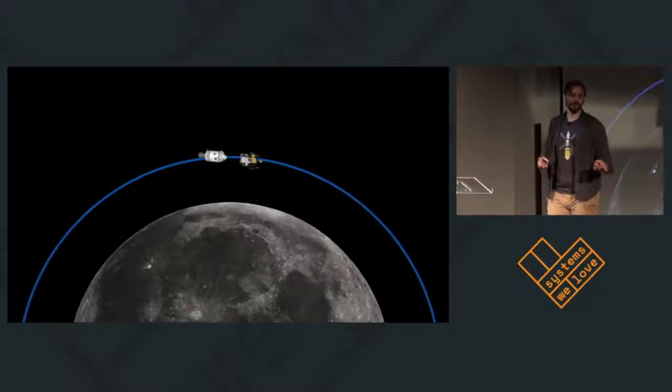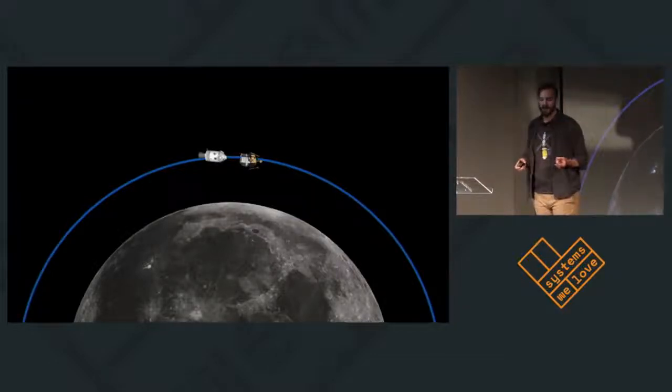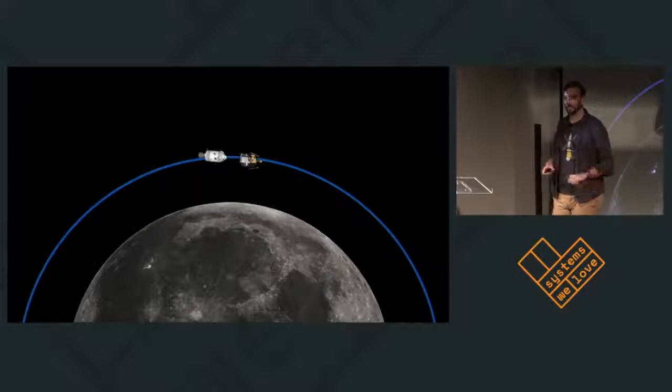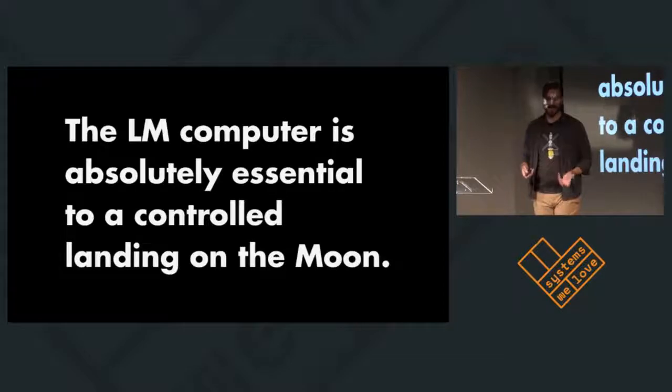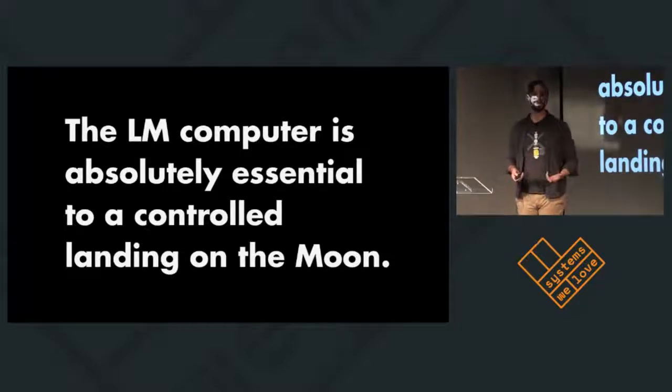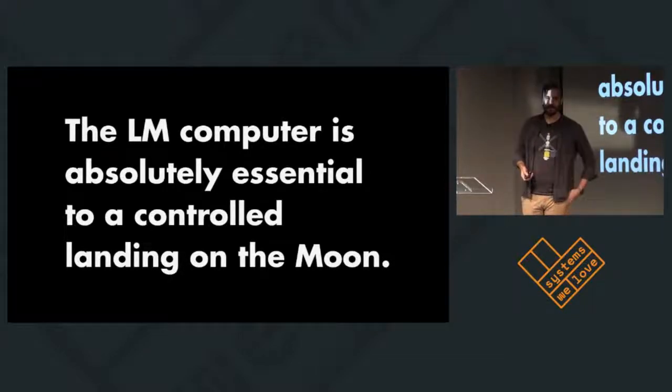So there are actually two computers in the Apollo spacecraft. One is in the command module, which is on the left-hand side, and there's one person in there. And the other is on the right-hand side. Now the lunar module computer is absolutely essential to a controlled landing on the moon. It is possible to fly the command module manually. It's extremely tedious and you can't do anything else, but you can do it. Without the computer in the lunar module, you die.